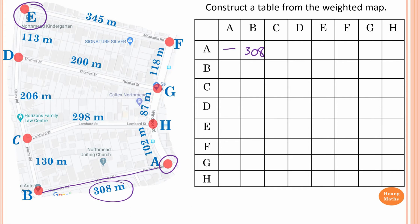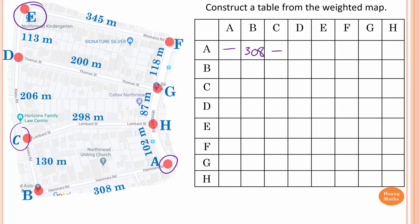From A to C, there is no direct connection from A to C, so we leave it blank. Similarly, from A to D there is no direct connection, so we leave it blank. From A to E, no direct connection — leave it blank. A to F, no direct connections — leave it blank. A to G, you have to pass through H, so there is no direct connection — leave it blank.